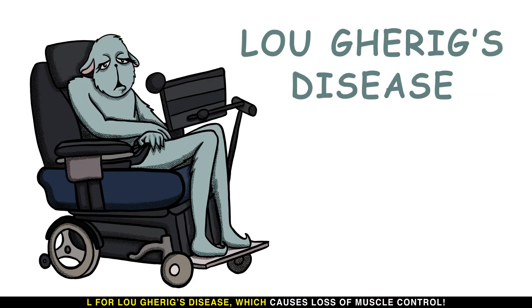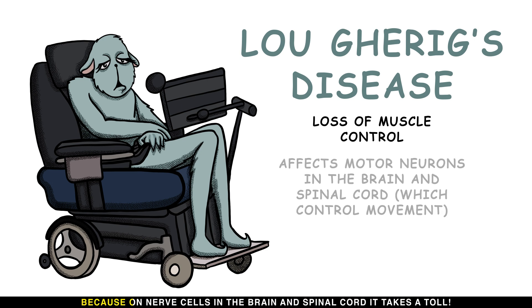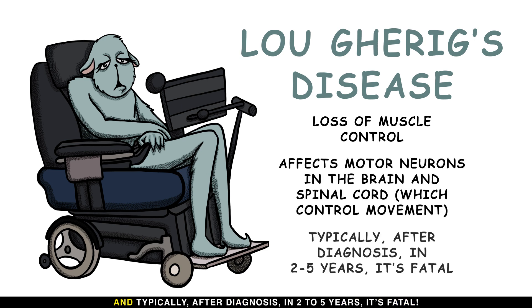L is for Lou Gehrig's disease, which causes loss of muscle control because it takes a toll on nerve cells in the brain and spinal cord. Typically, after diagnosis, it is fatal within two to five years.